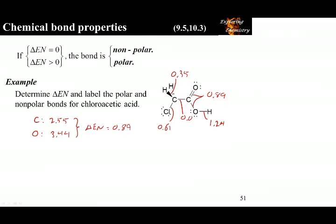Note that the oxygen-hydrogen bond has the greatest electronegativity difference. This bond has the greatest ionic character and is also the bond that breaks as part of the acid nature of chloroacetic acid.